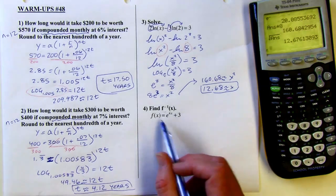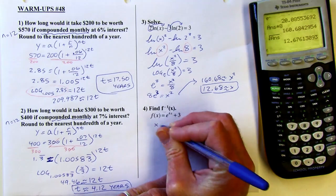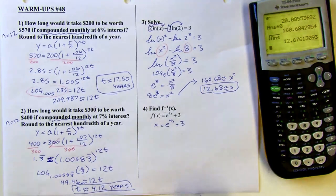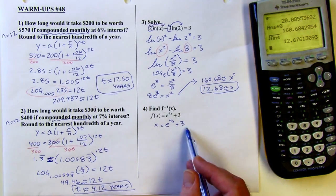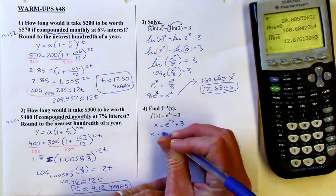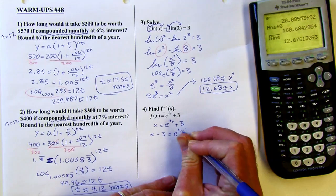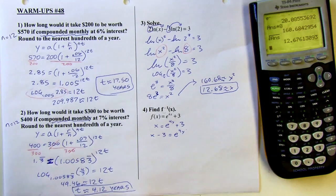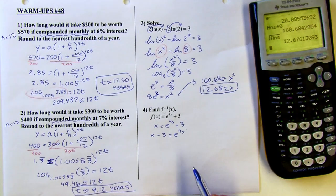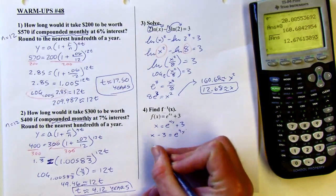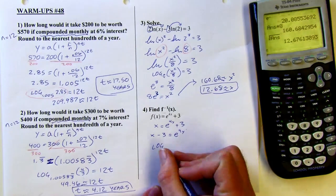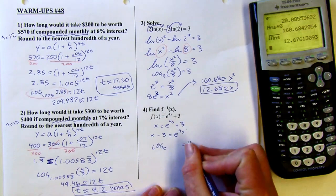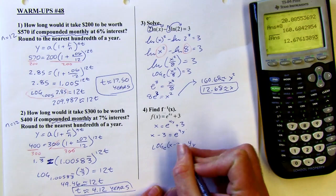All right. Last one, we're going to find the inverse of this function. So I'm going to switch the x and the y first off. Then I'm going to solve for y. So I'm trying to get the y by itself. Let's start by subtracting three from both sides.